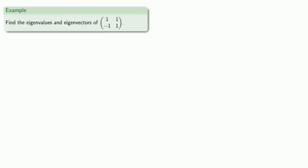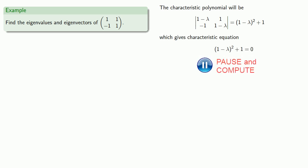For example, suppose I want to find the eigenvalues and the eigenvectors of the matrix. So we'll find our characteristic polynomial, which will be, and that gives rise to a corresponding characteristic equation.